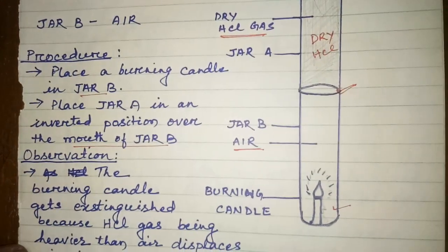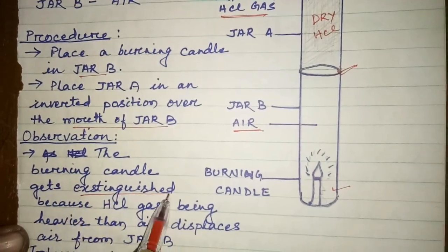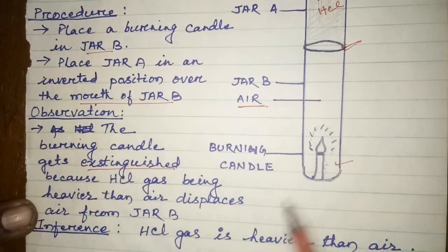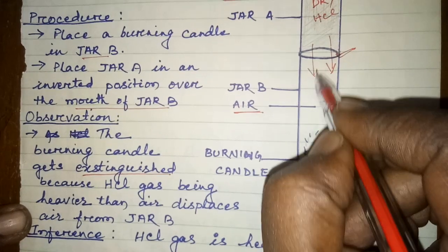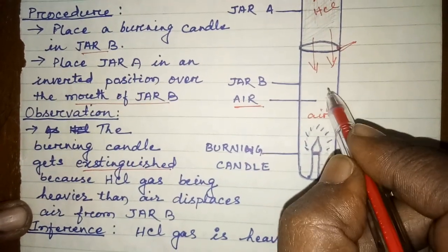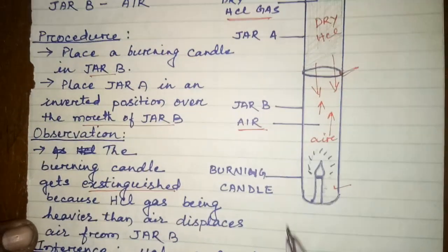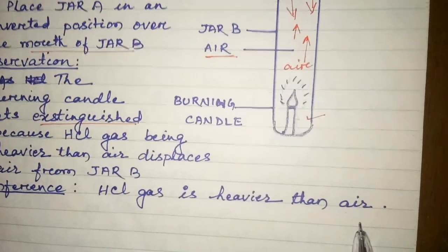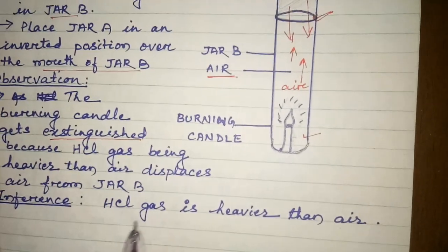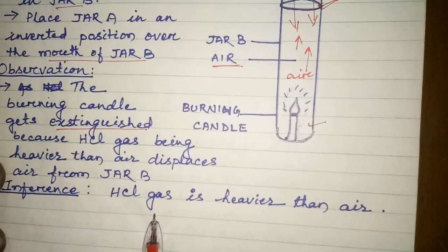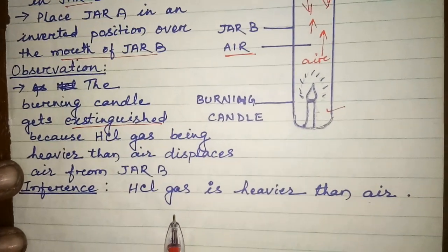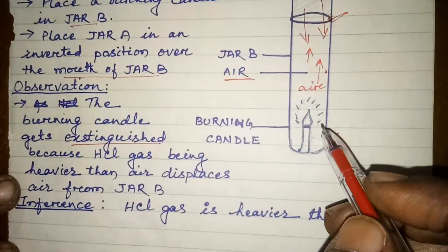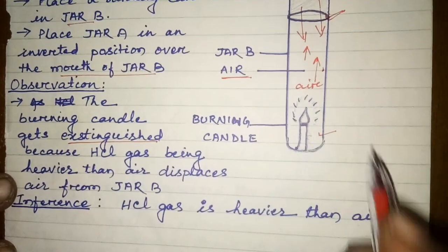Then what do you observe? The burning candle gets extinguished. This is because HCl gas, being heavier than air, displaces the air — HCl gas comes down into jar B and the air goes up into jar A. The inference is that HCl gas is heavier than air, and because HCl gas is neither combustible nor supports combustion, it puts out the candle.